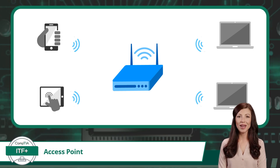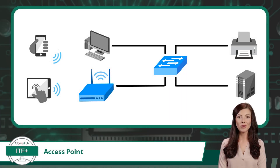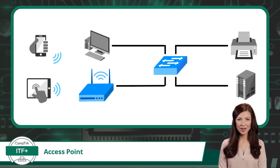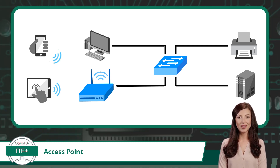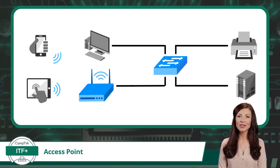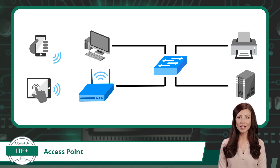But how does a wireless access point work with other wired networks? Well, it's quite simple. The wireless access point takes the data packets it receives from devices, such as smartphones, tablets, and laptops, and transmits them wirelessly to the network. Similarly, it receives data from the network and sends it wirelessly to the devices connected to it. This two-way communication allows devices to access the network and share information with each other seamlessly.